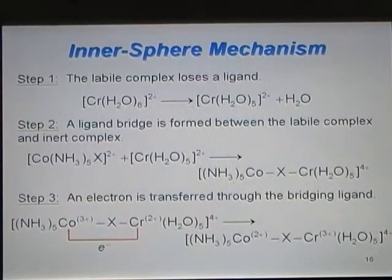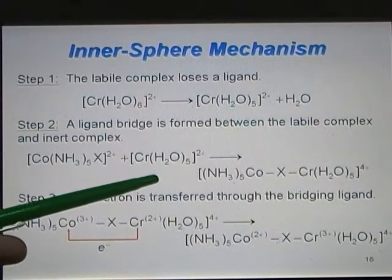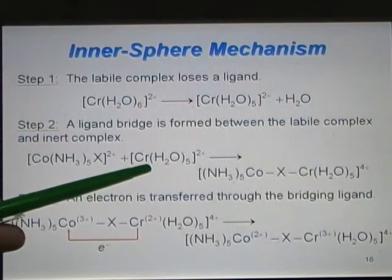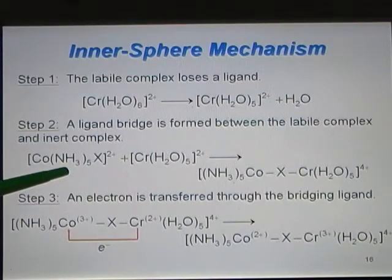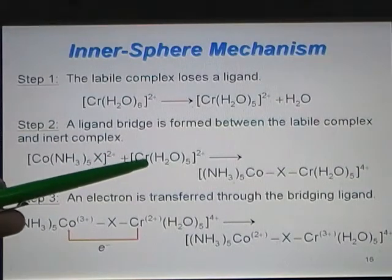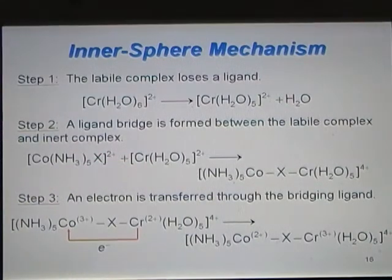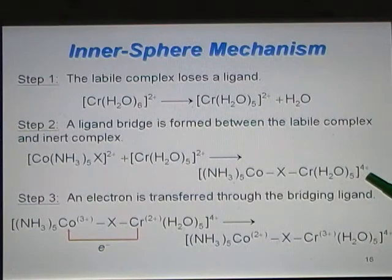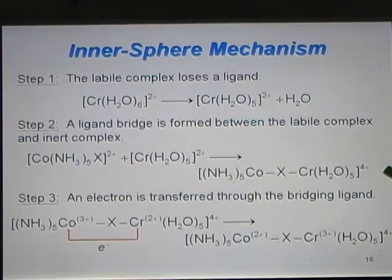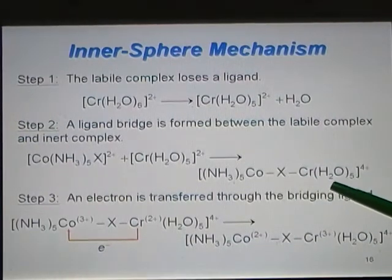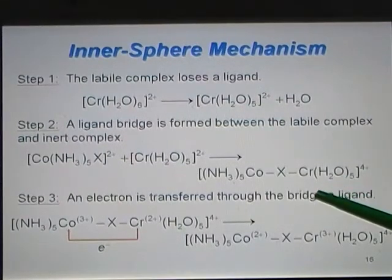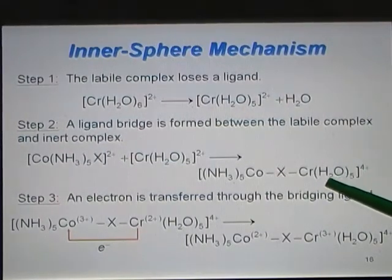In the second step, a bridging ligand, or a ligand bridge, is formed between the labile complex and the inert complex. Here is the labile complex, and here is the inert complex. The X will form a bridge between Cr and Co, forming this intermediate. It is a complex ion where X is the bridging ligand.